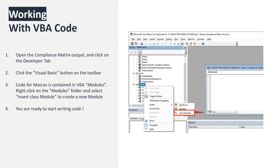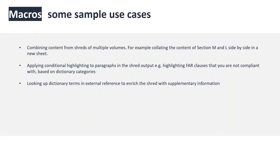Now, some sample use cases that required writing code. One example: combining content from a multi-volume shred where section L and section M were shredded across multiple documents, creating multiple tabs in the compliance matrix output. A macro takes the content from both tabs, brings them into a new tab, and lines them up side by side. This is quite difficult with a recording but much easier when writing code.